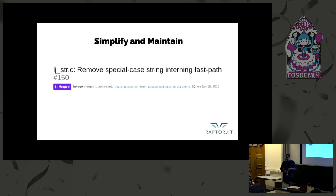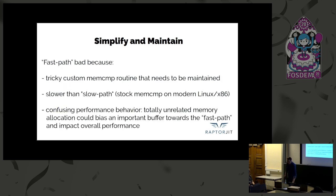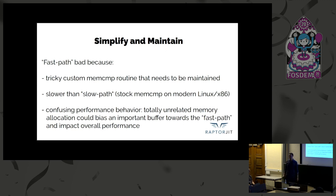We're also looking to remove complex optimizations that don't carry their own weight anymore. Here we removed a special-case fast path for string interning. Paraphrasing from the pull request: this fast path was bad because it was a tricky custom memcompare routine that needs to be maintained. It turned out to be slower than the stock memcompare on modern x86, which was the so-called slow path. And it led to confusing performance behavior where unrelated memory allocation could bias buffer use toward the fast path and impact overall performance.